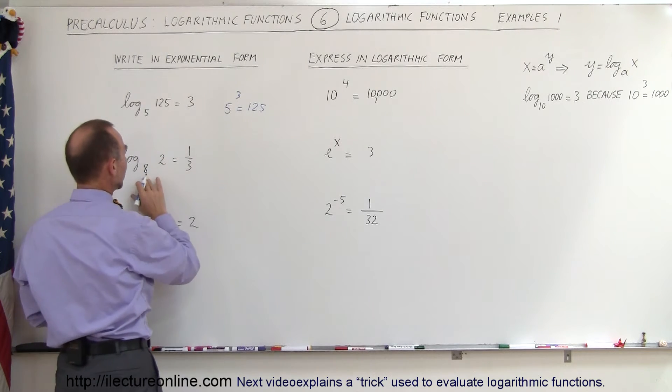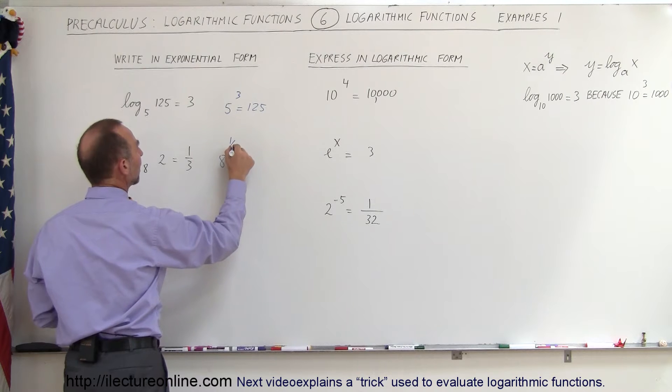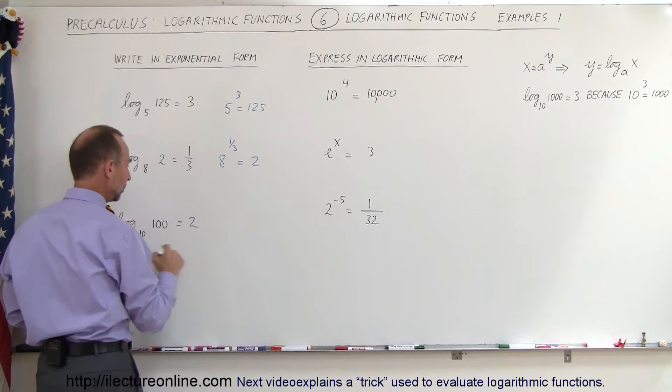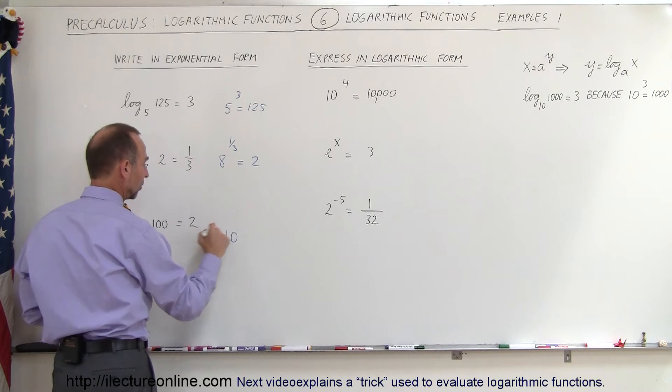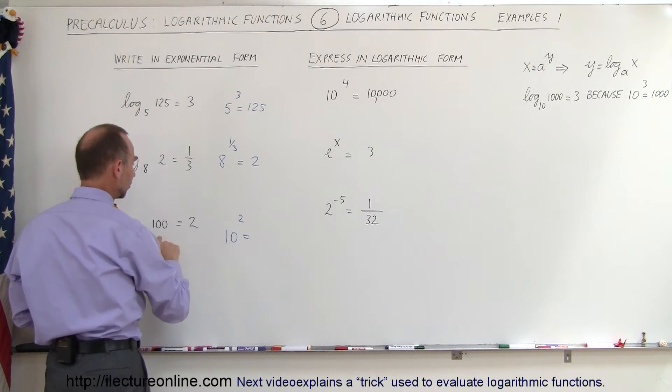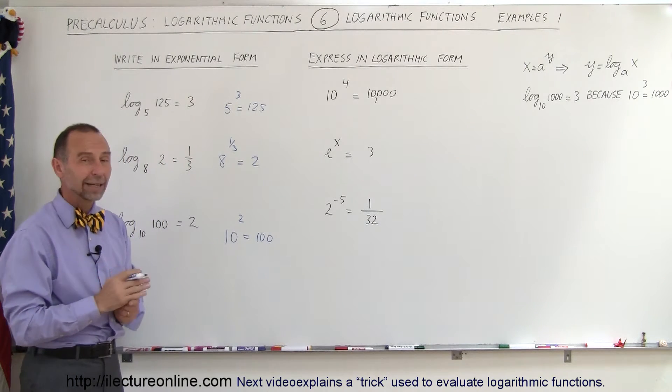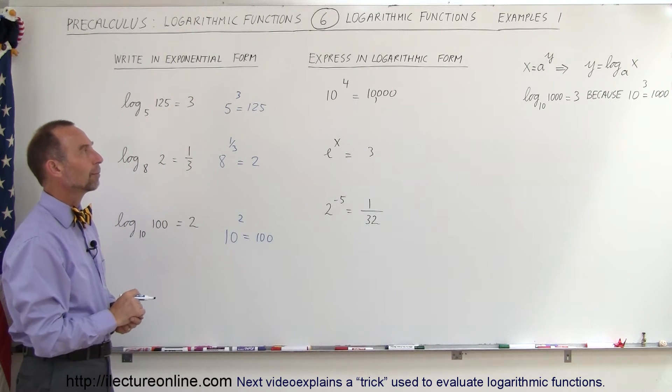Here again we take the base 8 raised to the one-third power and we should get equal to 2. And here again we take the base raised to the second power and that equals the number 100. So you can see that if you follow that straightforward rule it becomes pretty straightforward to do the problems.